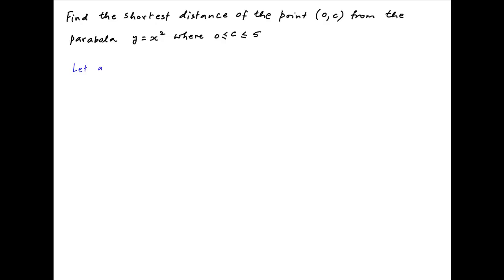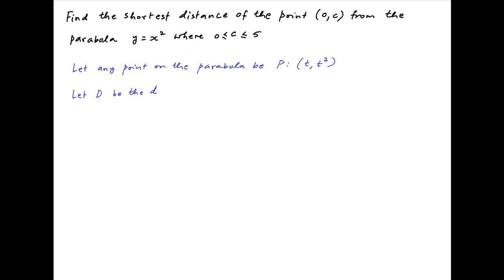Let P be any point on the given parabola y = x², and let's assume that the coordinates of this point are (t, t²). Let's assume that the distance between the given point (0, c) and (t, t²) is d.